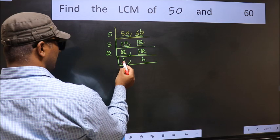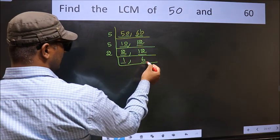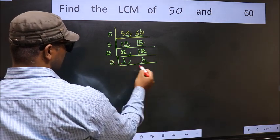Now we got 1 here, so focus on the other number 6. 2 times 3 is 6.